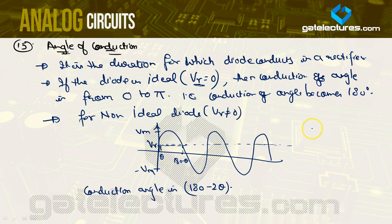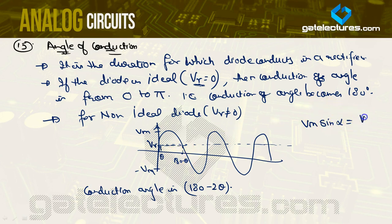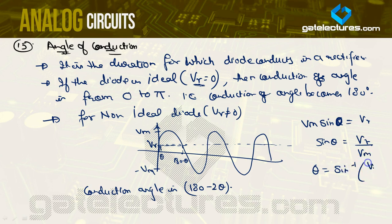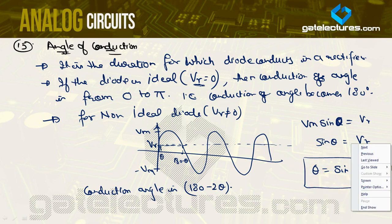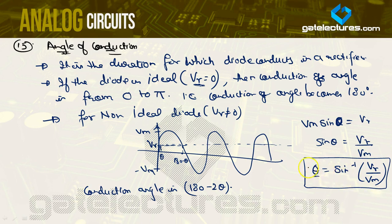To find θ: at the angle where Vm·sin(α) equals Vγ, we call that angle θ. So sin(θ) = Vγ/Vm, which gives θ = sin⁻¹(Vγ/Vm). If you are given the cut-in voltage and Vm, you can easily find θ, and the conduction angle becomes 180° − 2θ.